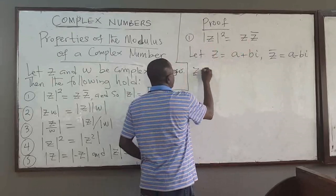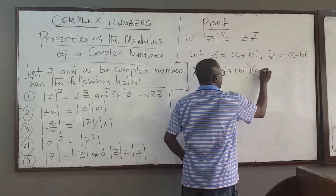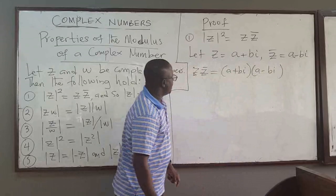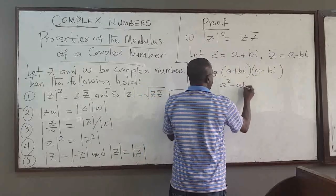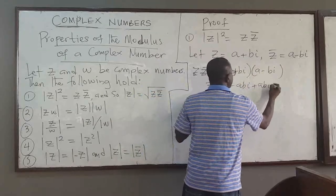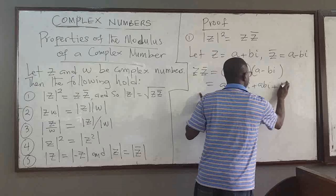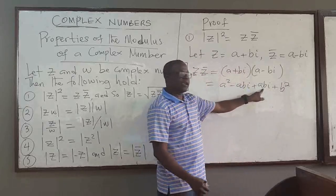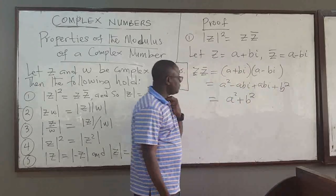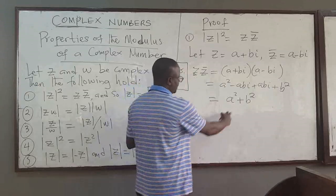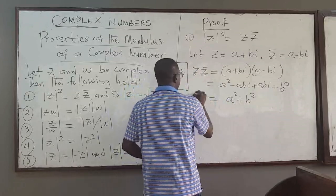Let's find Z multiplied by Z-conjugate, which will be equal to (A + Bi)(A − Bi). This equals A squared, and the middle terms −ABi + ABi cancel out, and since i² = −1, we get plus B squared. So Z·Z̄ = A² + B². Let's call this equation 1.